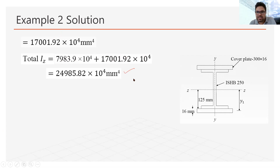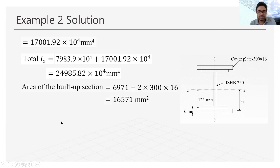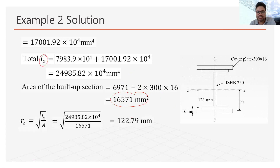Summing the values, the total Izz of the combined section is obtained. The area of the built-up section equals the area of the I-section plus 2 × (width of plate × thickness of plate), giving a total area of 16,571 mm². Using Rzz = √(Izz/A), the radius of gyration about the ZZ axis of the combined section is calculated as 122.79 mm.